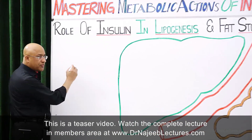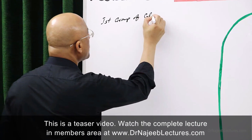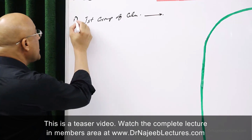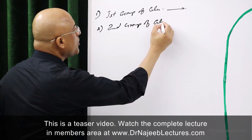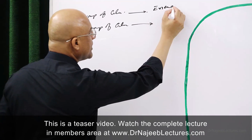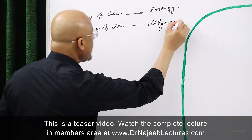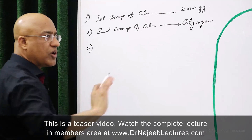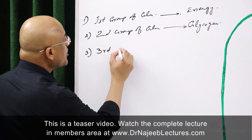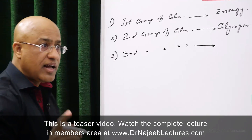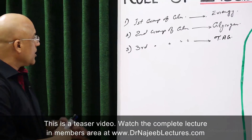There are three groups of glucose molecules. The first group, when they enter the body, they are there to generate energy. The second group of glucose molecules are used to produce glycogen. And if still more glucose molecules are available, energy needs of the body are met, and glycogen stores are full, then the third group of glucose molecules — their carbons will eventually be converted into triacylglycerol.